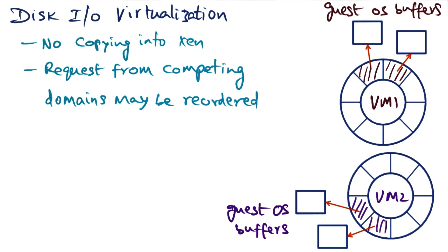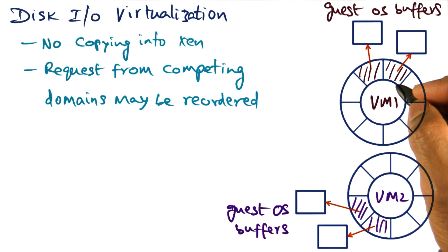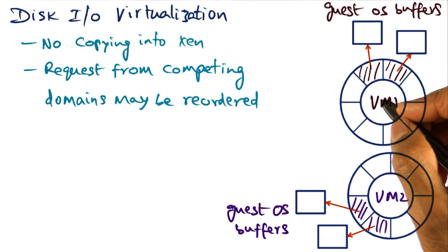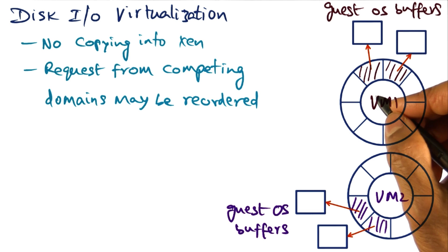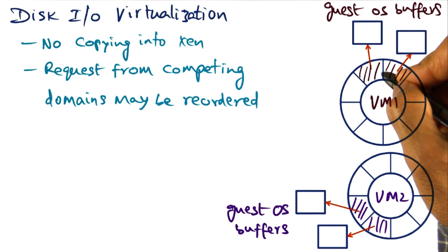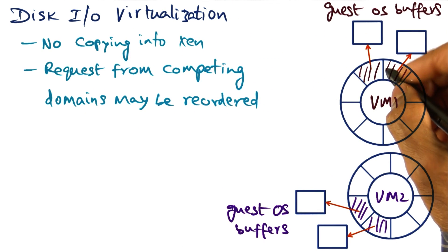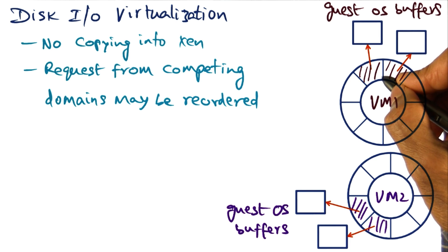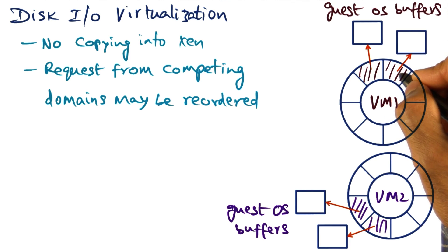Similar to network virtualization, the communication between the guest operating system and Xen strives to avoid copying altogether — no copying into Xen — because what we're doing is enqueuing descriptors for the disk IO that we want to get done.